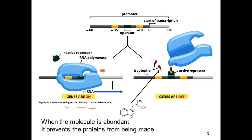In that case, tryptophan binds to the TRIP repressor protein right here and induces a conformation change — here it's rounded and it won't bind DNA. When tryptophan binds to the repressor, it changes its conformation so that it's now able to bind DNA in the place where RNA polymerase normally binds, and so the genes are turned off. This is a very simple example of negative feedback regulation.